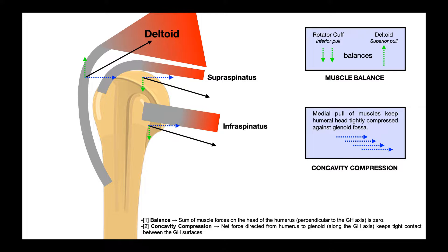In this video, I want to discuss two of the factors that lead to stabilization of the glenohumeral joint — really keeping that humeral head tightly bound in the glenoid fossa and preventing dislocation. In total, there are four mechanisms that lead to this. Three of them are non-ligamentous mechanisms, meaning they do not involve ligaments directly or at all, and then one of them is the ligament mechanism. The three non-ligamentous mechanisms are actually a lot more important and produce a lot more stabilization of the shoulder joint than the ligaments do.